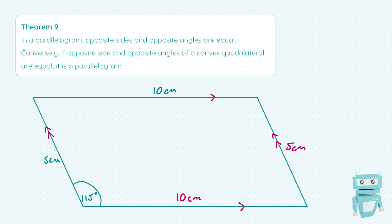For the opposite angles, we only have one angle given here — the one on the bottom left, which is 115 degrees. Based on this angle we can work out all the other angles, because the total number of degrees in any parallelogram is always 360. We start with the opposite angle, which is in the top right, and because the bottom left is 115 degrees, this top right angle is also 115 degrees.